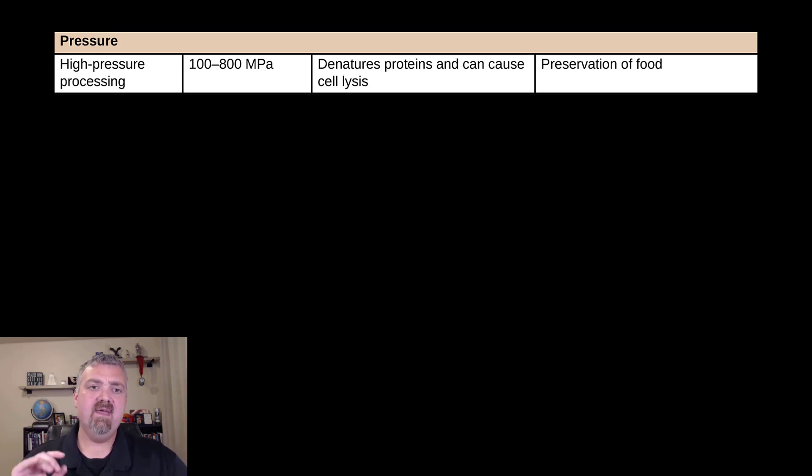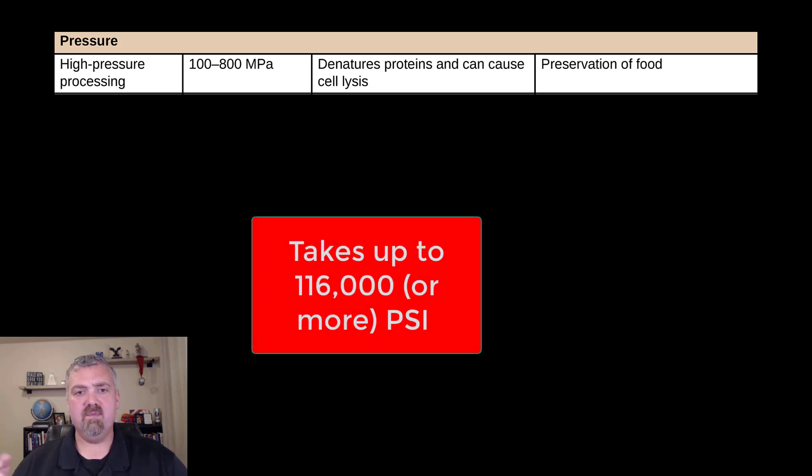So I did the math. 800 megapascals would be over 116,000 pounds per square inch. Think about like your car tire with 30 pounds per square inch. Or even our autoclave only uses 15 pounds per square inch. So we're talking about massive amounts of pressure.